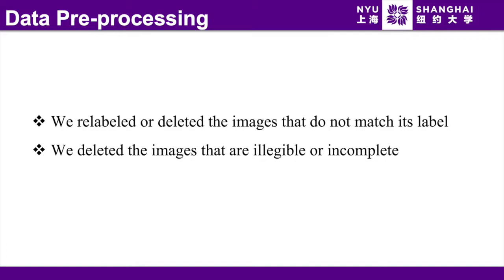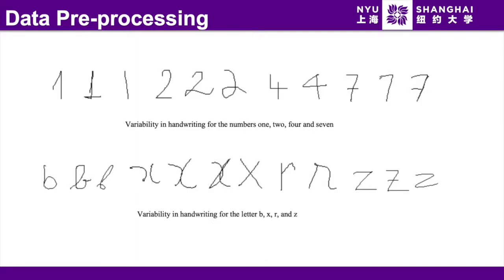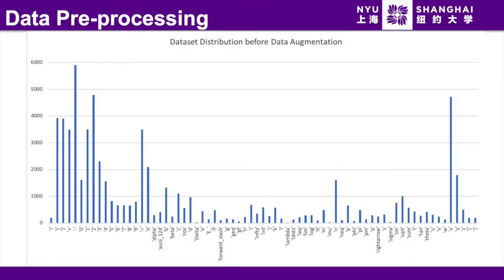For the data preprocessing, we relabeled or deleted the images that do not match its label, and we deleted the images that are illegible or incomplete. Another issue is the variability in handwritten styles. Writing one as a vertical line confuses with given that in conditional probability. So to avoid confusions, we deleted all the problematic images. After all this process, we are left with about 66,000 images with 70 classes. But we can see from the distribution plot that it is unbalanced between classes.